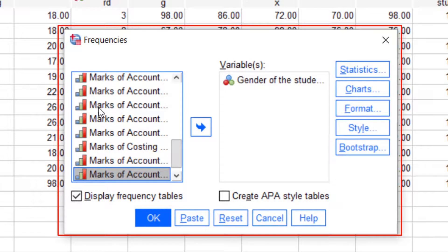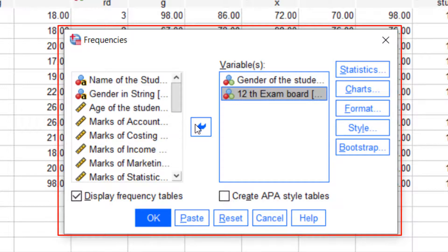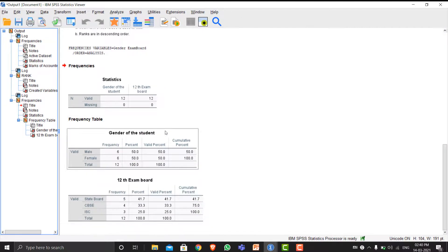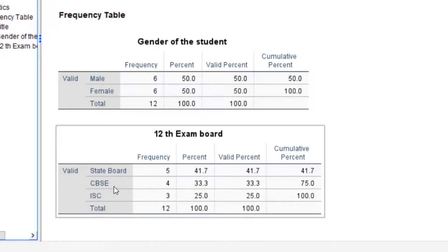This will show the frequency tables. For gender of the student: male 6, female 6, total 12. For 12th exam board: State Board, CBSE, ISC, with frequencies, percentages, and cumulative percentages displayed.